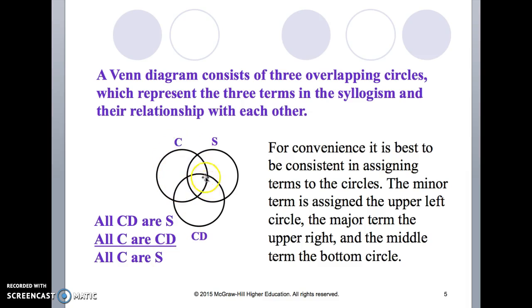The term that appears two times in the premises but nowhere in the conclusion is the middle term and we assign a circle that overlaps the interlocked circles.